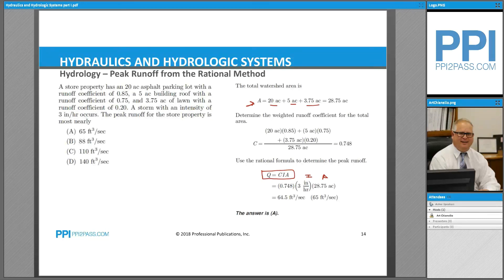Now what's left is to calculate the runoff coefficient. Because we have different areas with different runoff coefficients, we can calculate a weighted runoff coefficient. To calculate a weighted runoff coefficient, we use this method right here where we have the area of the asphalt parking lot multiplied by its runoff coefficient...